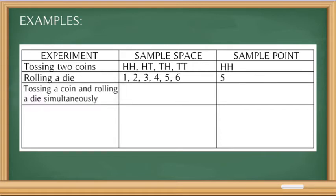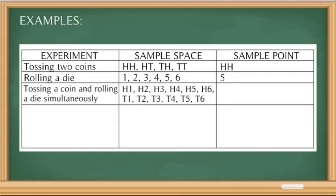Another experiment is tossing a coin and rolling a die simultaneously. If we toss a coin, the possible outcomes are heads and tails. When we roll a die, the possible outcomes are 1 through 6. So our sample space when tossing a coin and rolling a die simultaneously will be: H1, H2, H3, H4, H5, H6, T1, T2, T3, T4, T5, and T6. A sample point, for example, could be T3 or tail 3.